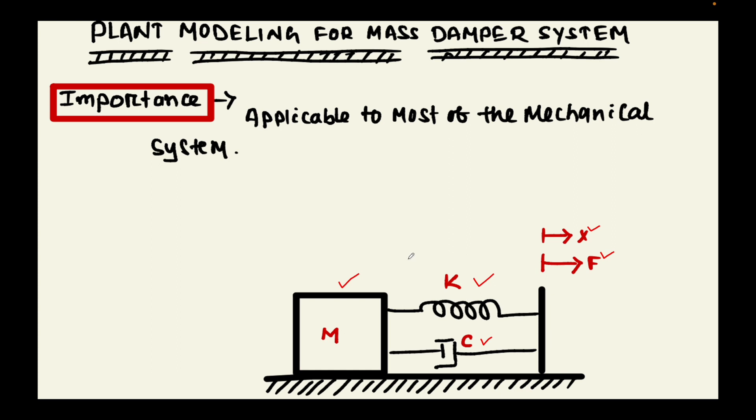When we apply this force, the spring will try to get compressed and the damper also will get compressed. Due to that there will be an opposite force that will be created. All these things can be represented with the help of a free body diagram.